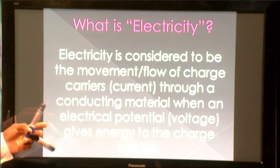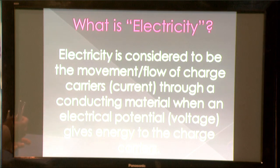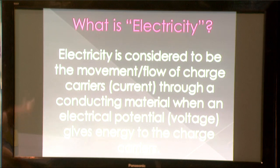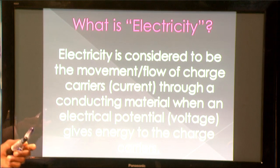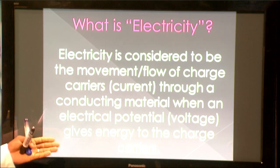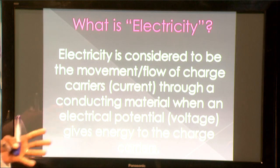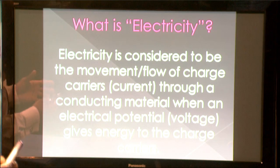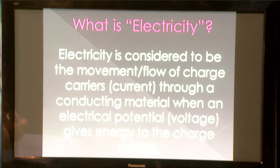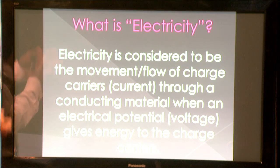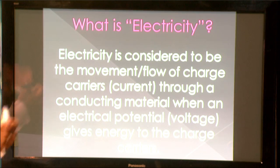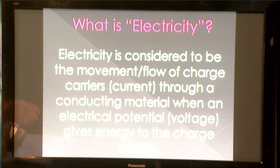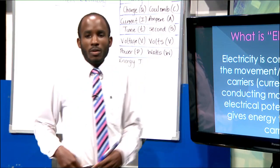It must move through a conducting material, because if the material is not able to conduct, then you can't have an electric current. It must conduct by virtue of what we call an electric potential or voltage — that gives energy to the charge carriers. Electricity flowing is a conversion of energy process: something provides electrical energy, the charge carriers carry it to the load, and it converts electrical energy to other forms, be it light or sound.